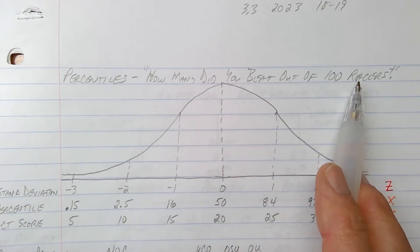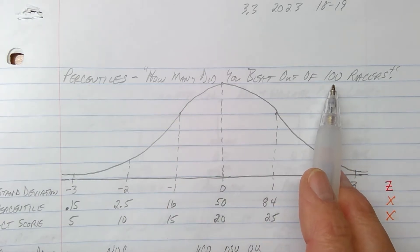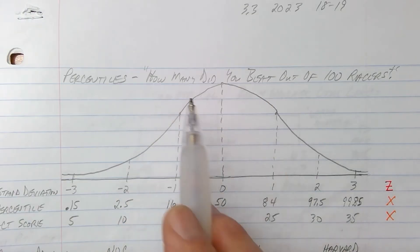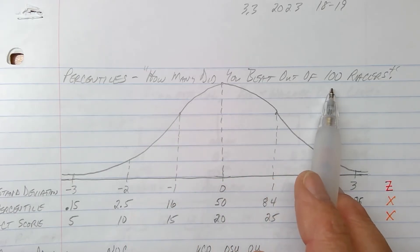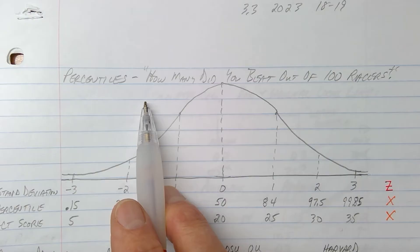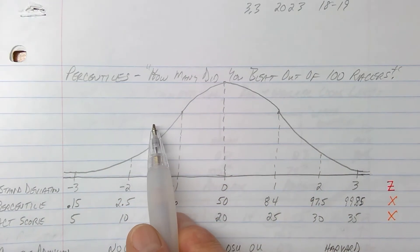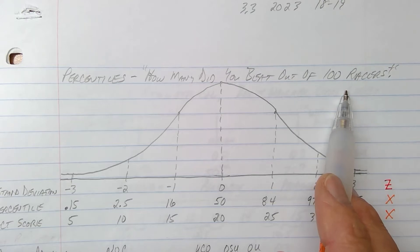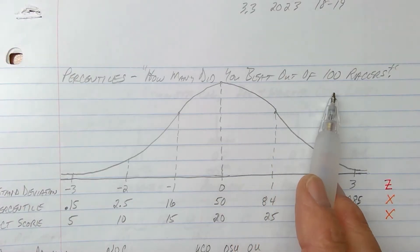So if there's a hundred people in a race and you're the first one who finishes, that means you beat 99 of those hundred racers — that means you're in the 99th percentile. And if you take a test, it doesn't matter what score you made. If you made a 45%, which sounds terrible, but if you beat everybody in the room, then you're in the 99th percentile. So the raw data doesn't matter when you're speaking percentiles — you're speaking about how many did you beat out of a hundred. Percent means per 100, out of a hundred.